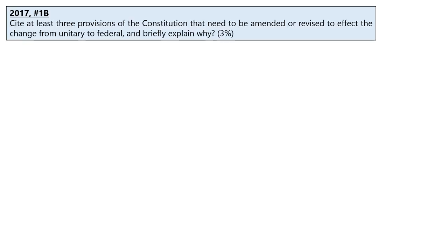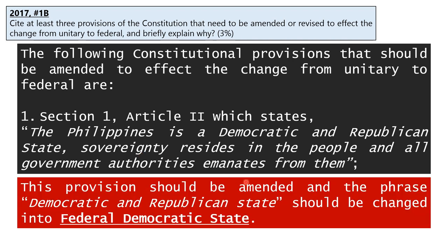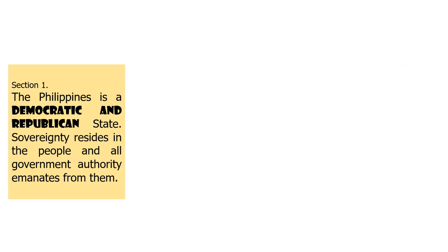If you will be asked — just like what happened in the 2000 bar exams, number one — cite at least three provisions of the Constitution that need to be amended or revised to effect the change from unitary to federal and briefly explain why. You can cite Section 1 of Article 2 of the 1987 Constitution. Instead of the Philippines being a democratic and republican state, it should now be changed into the federal democratic state. Remember the form of government of the Philippines: it is democratic and republican.